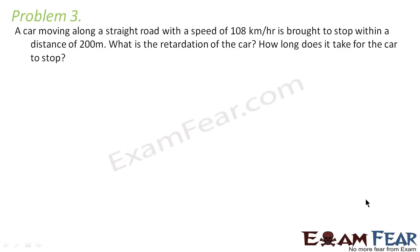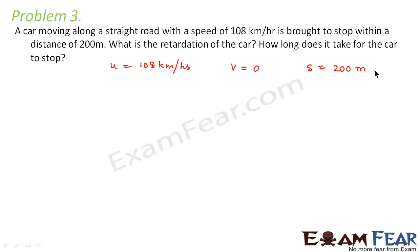A car moving along a straight road with a speed of 108 km/h is brought to stop within a distance of 200 meters. The initial speed is 108 km/h, the final velocity becomes 0, and s equals 200 meters. What is the retardation of the car, and how long does it take to stop? Retardation is nothing but negative acceleration, so the value of acceleration we get should be negative.